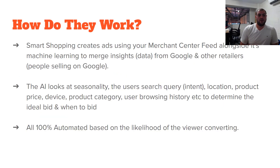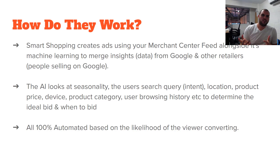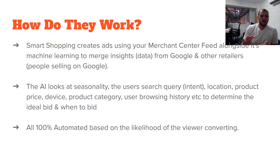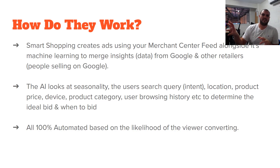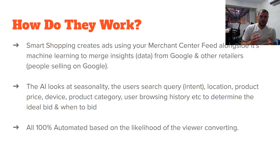So how do Smart Shopping campaigns work? We create ads using our Merchant Center feed, just like a normal shopping campaign. It uses machine learning to merge insights — data from Google and other retailers. We're using other retailers' info selling on Google, and Google has access to that. With normal campaigns, that's not factored in as much. So if you aren't using Smart Shopping campaigns, you're not fully utilizing that. The AI looks at so many different data points.